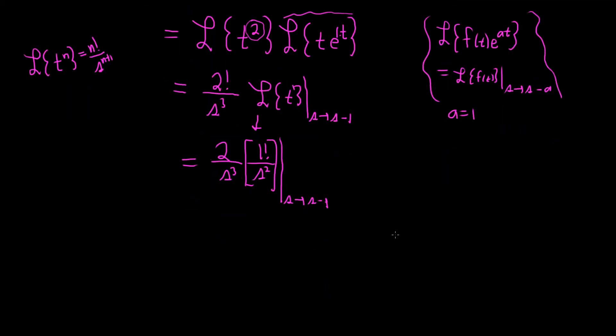So this is equal to 2 over s³ and then times. Now we're going to go ahead and replace s with s-1. So it's 1 over and then parentheses s-1 quantity squared. And that is a good answer.